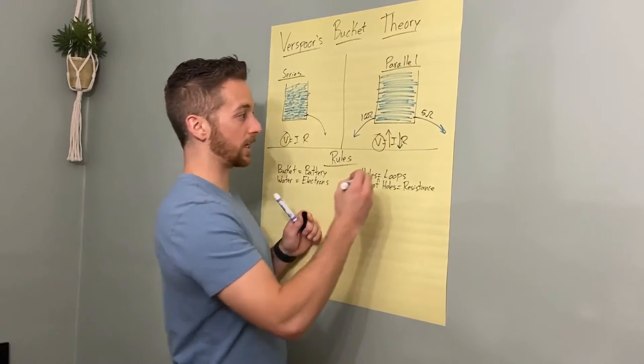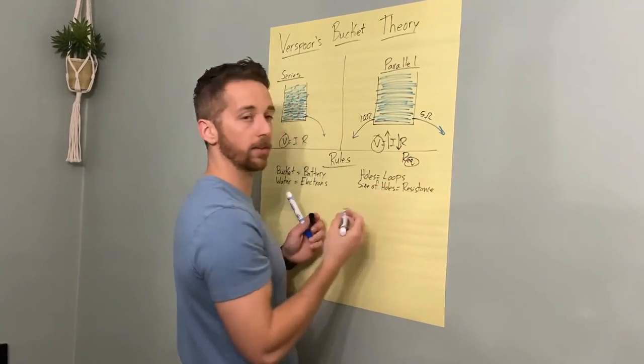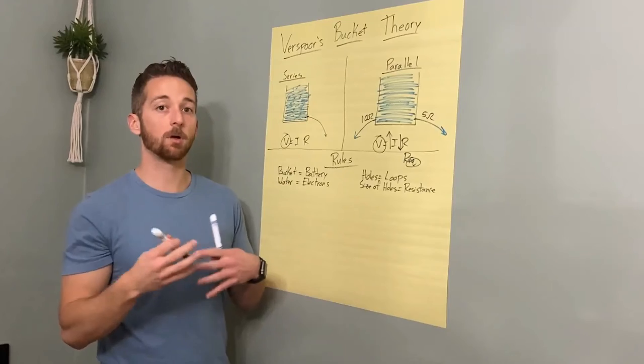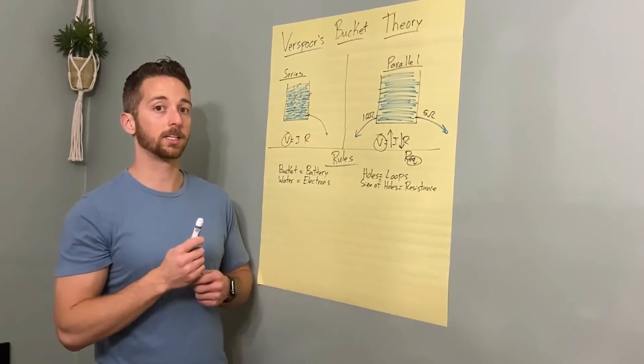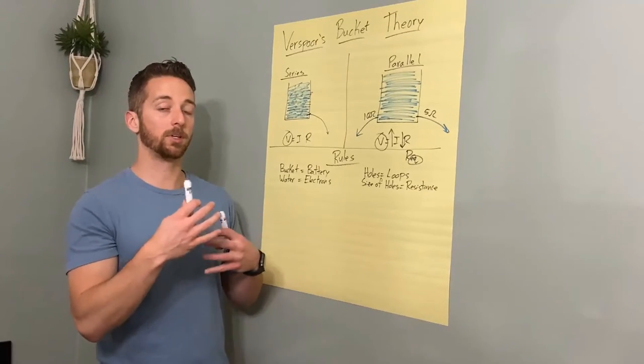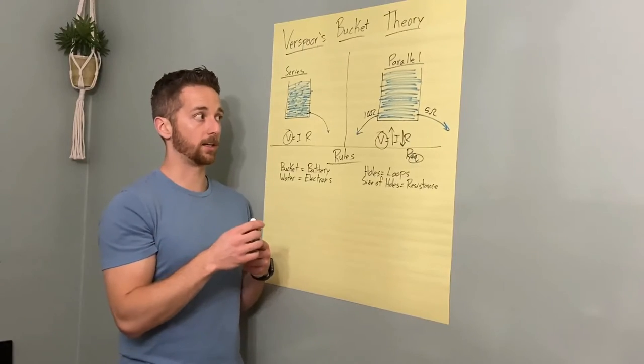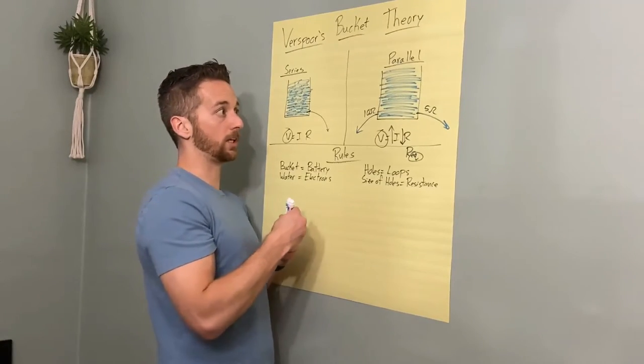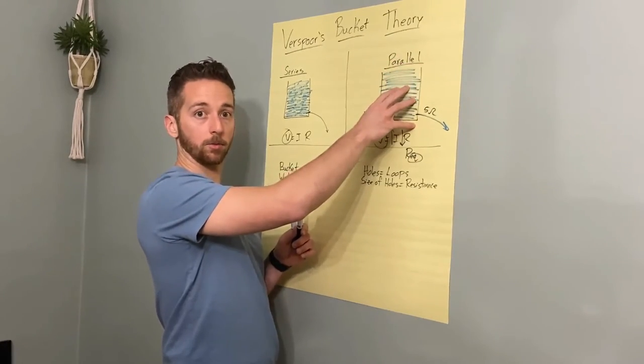That's why in your reference table it says Req for equivalent. It doesn't say the total or the summation of your resistance. It's what the resistors would be equivalent to if you just had one instead. So you got to remember here, it's tricky, but always think about a bucket filled with water.